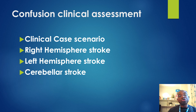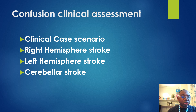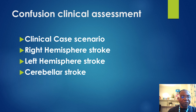Moving on to left hemisphere stroke — the left hemisphere of the brain controls movement of the right side of the body and speech and language abilities for most people. A left hemisphere stroke often causes right hemiplegia. In contrast to survivors of right hemisphere stroke, patients who have had a left hemisphere stroke often develop a slow and cautious behavioral style. They may need frequent instruction and feedback to complete tasks.